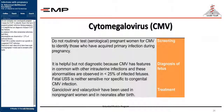Routine testing of pregnant women for CMV to identify primary infection is not recommended. Fetal ultrasound is helpful but not diagnostic, as CMV shares features with other intrauterine infections; ultrasound abnormalities are observed in only 25% of infected fetuses and fetal USS is neither sensitive nor specific for congenital CMV. Ganciclovir and valacyclovir have been used in non-pregnant women and in neonates after birth.